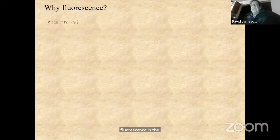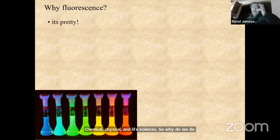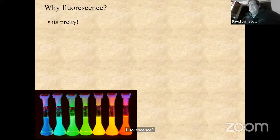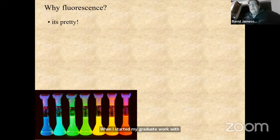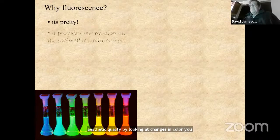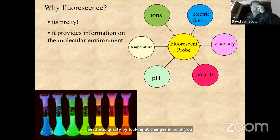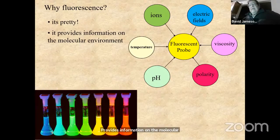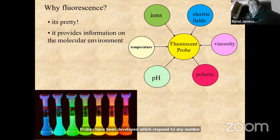Why do we do fluorescence? First of all, it's pretty — but that's not just a glib answer. When I started my graduate work with Gregorio Weber, he pointed out that what attracted him partly was the aesthetic quality. By looking at changes in color, you can understand phenomena at the molecular level. Fluorescence provides information on the molecular environment, and fluorescent probes have been developed which respond to viscosity, polarity, temperature, pH, etc.